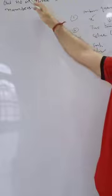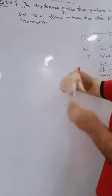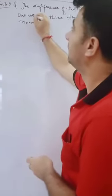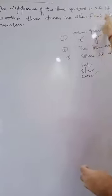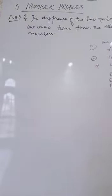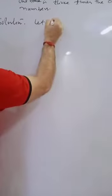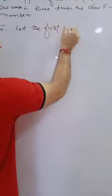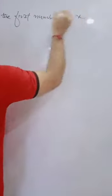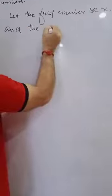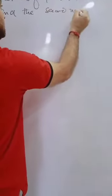So let us solve the question. This is a number problem. The difference of the two numbers is 26, and one number is three times the other — find the numbers. First, we represent the unknown quantities by two variables. Let the first number be X and the second number be Y.